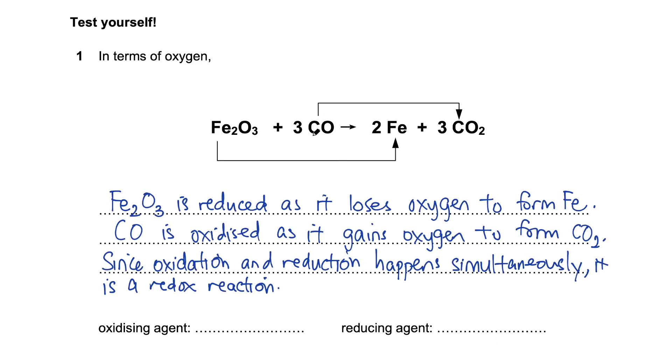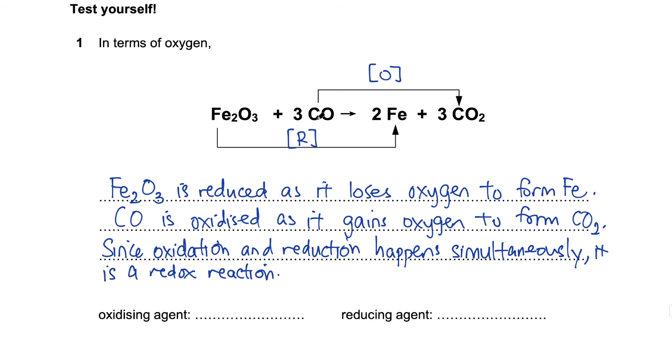In question 1, carbon monoxide gains oxygen, therefore it is oxidized. Iron 3 oxide is reduced to iron by losing oxygen. Since both happen simultaneously, it is a redox reaction. When carbon monoxide is being oxidized, it means that the other substance must have caused it. So the oxidizing agent is iron 3 oxide.